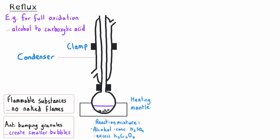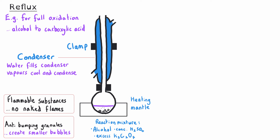In addition, it's important that we have some anti-bumping granules in our reaction mixture. These ensure that the bubbles created are smaller, and this stops the reaction from being too violent. The condenser itself is a vertical glass tube with a cooling jacket around it. This cooling jacket is filled with water, which comes in at the bottom of the condenser and goes out at the top. This ensures the water totally fills the condenser so that the vapors cool and condense in the right positions.